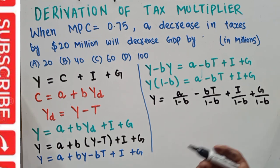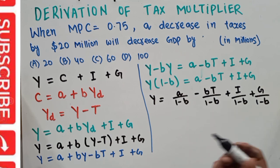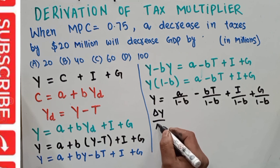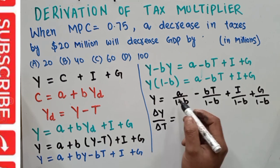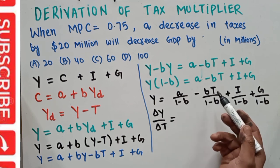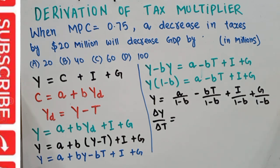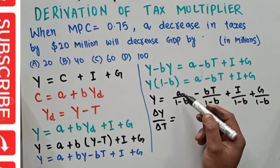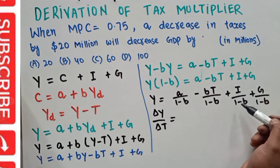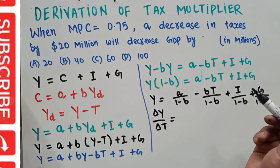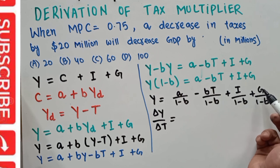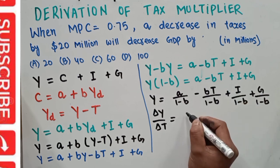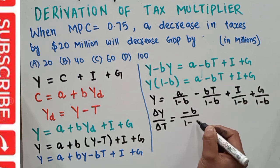To find the effect of a change in tax on total GDP, we find the differential of Y with respect to T — that is, ΔY/ΔT. Since T only appears in the second term, the derivative of the first, third, and fourth terms with respect to T is zero. The derivative of the second term gives us −b/(1−b).